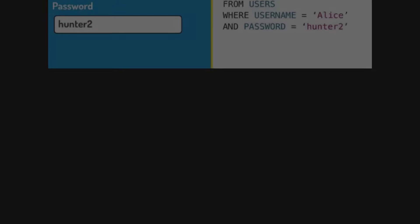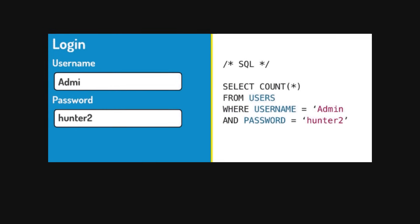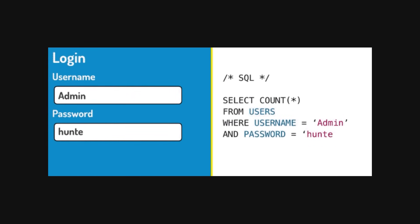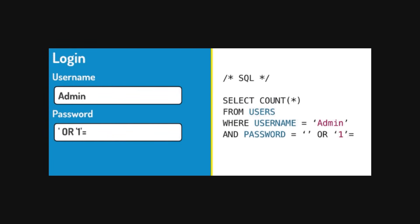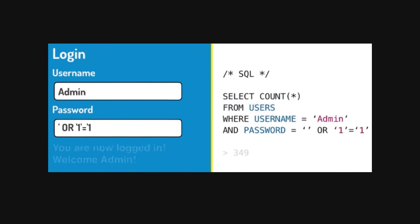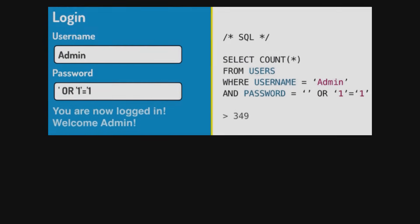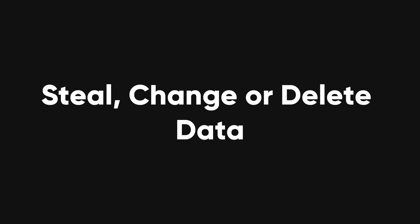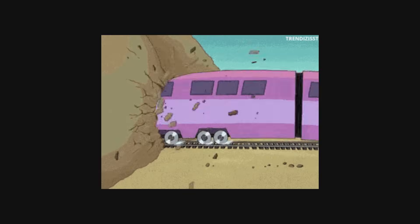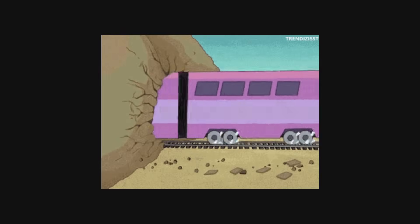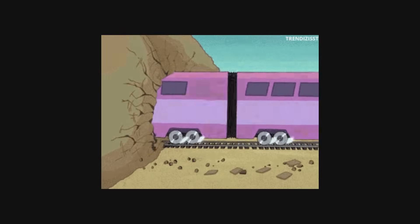SQL injection. SQL injection is a trick hackers use to get into a website's database by inserting malicious code. This can let them steal, change, or delete data. It's like finding a backdoor into a secure building.